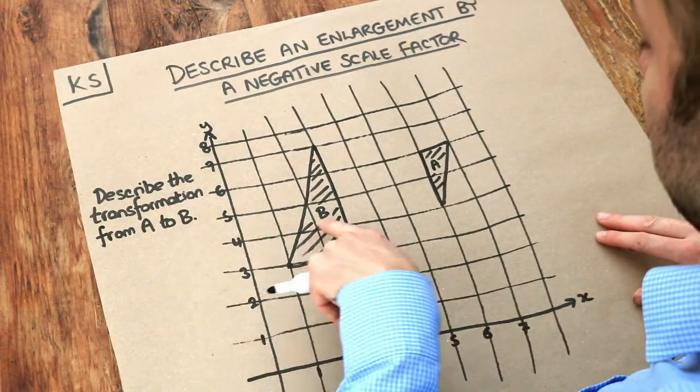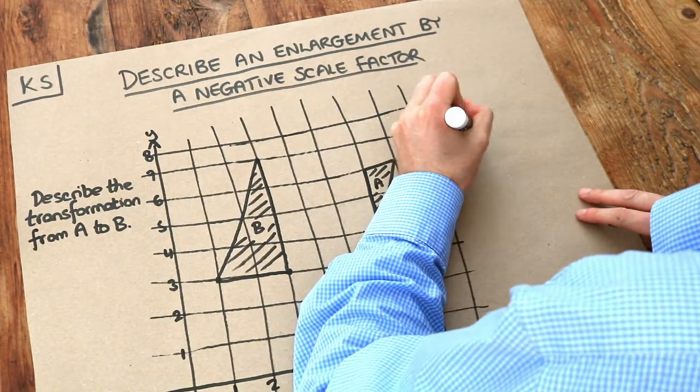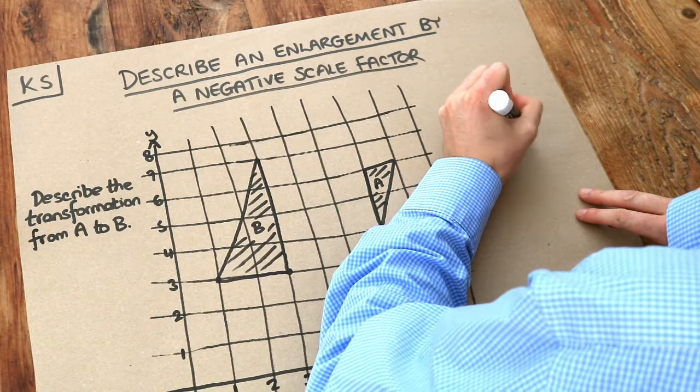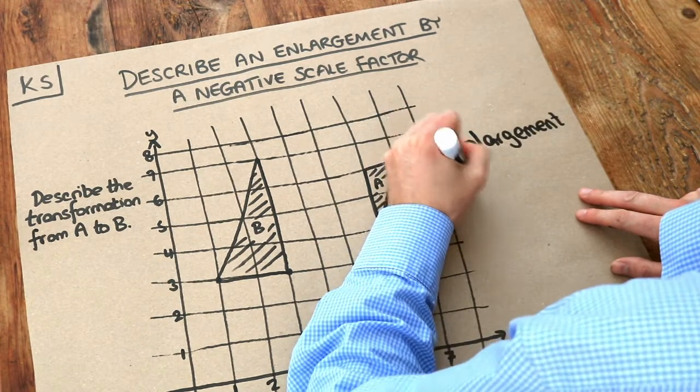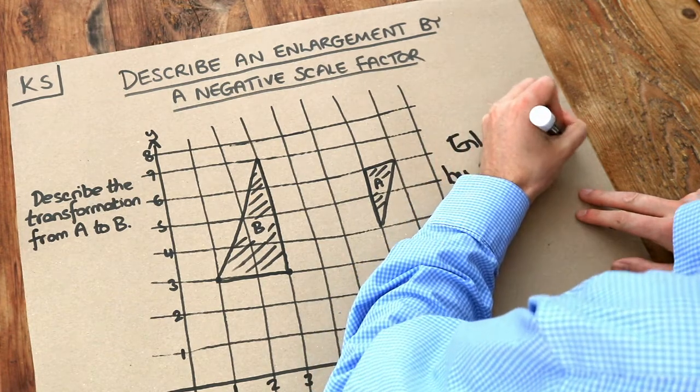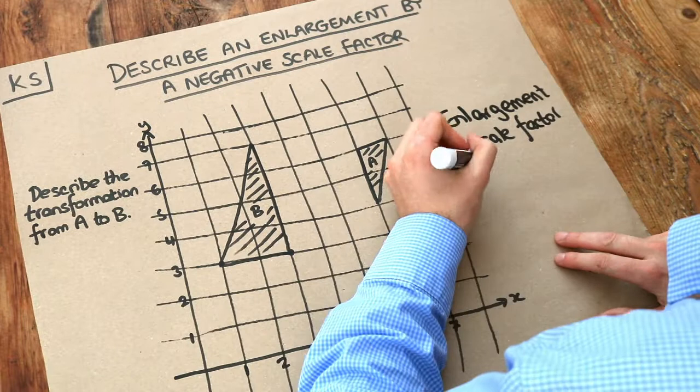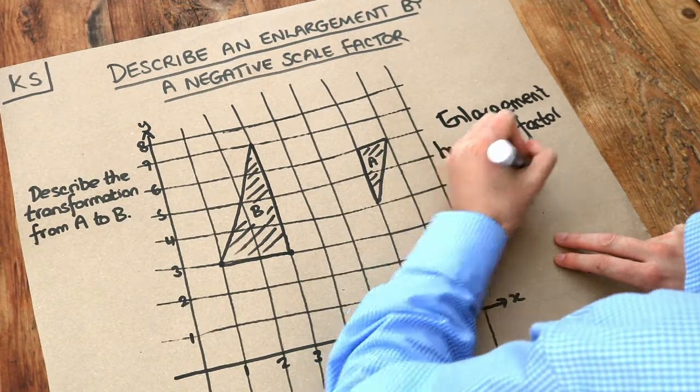When we describe this transformation we need to say what type of transformation it is, and this is an enlargement. We also need to say what the scale factor is, by scale factor and then we give a particular number which we'll work out. And then we also say what the center is. We have center and then we're going to give a coordinate.